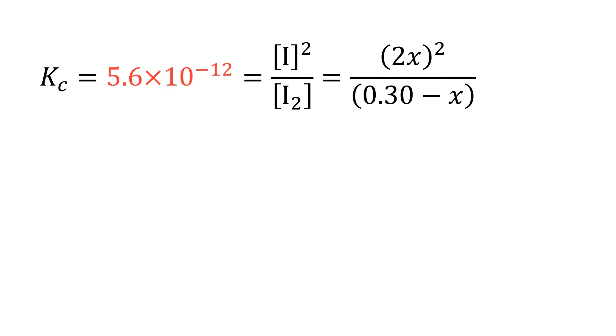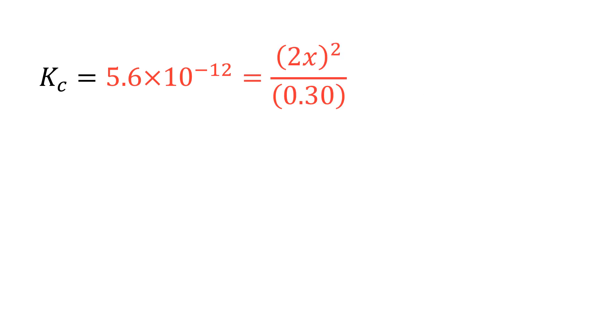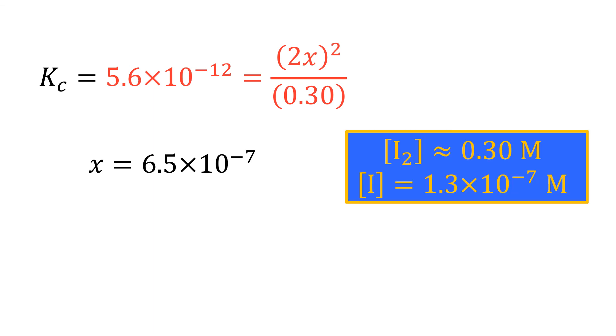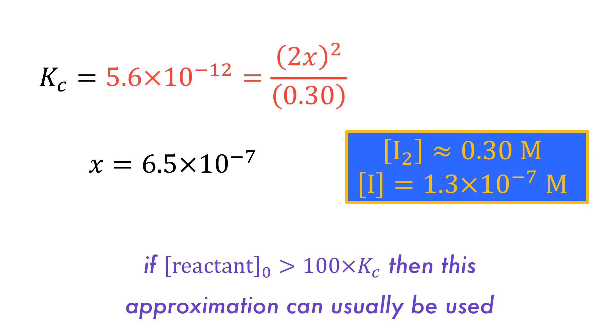it is possible to approximate 0.3 minus x as 0.3, resulting in a much simpler equation. This can be solved to give x and then the equilibrium concentration of I2 is effectively unchanged. This method is usually only appropriate if the concentration of the reactant is more than 100 times larger than the Kc value.